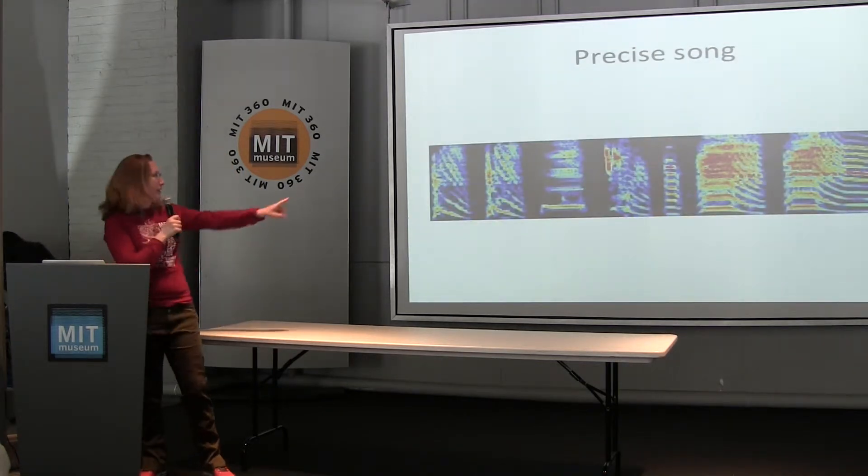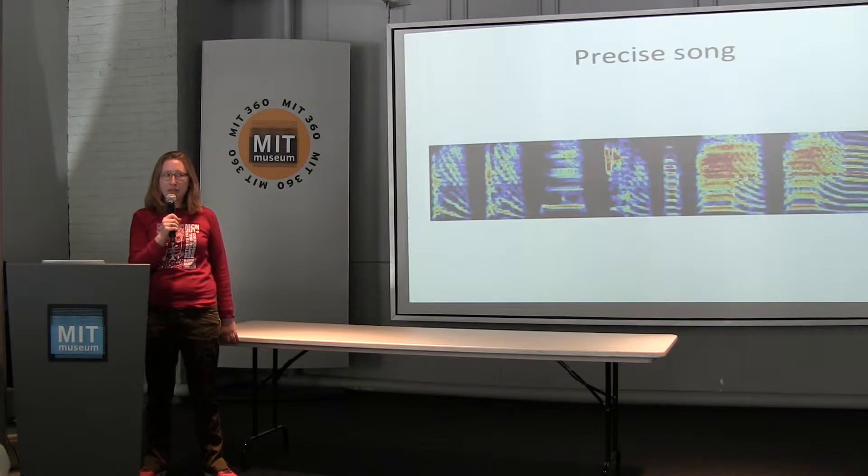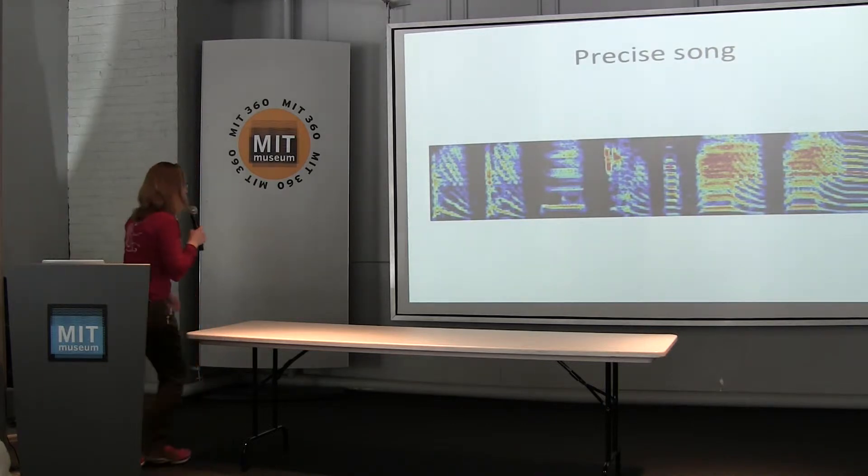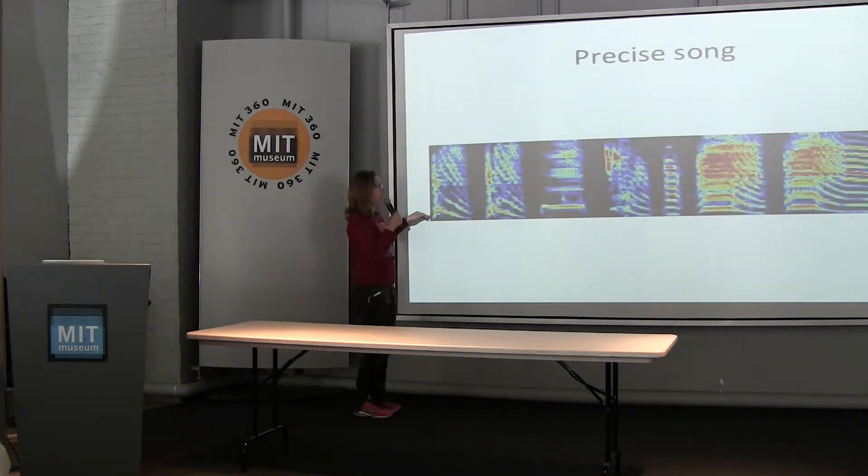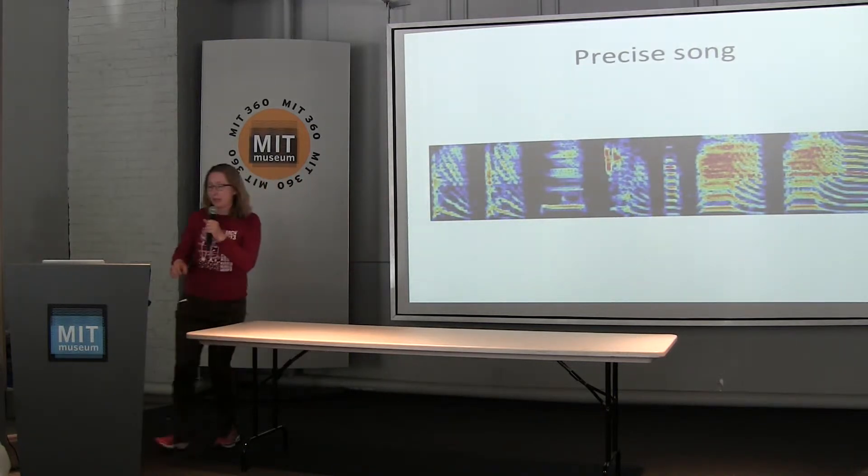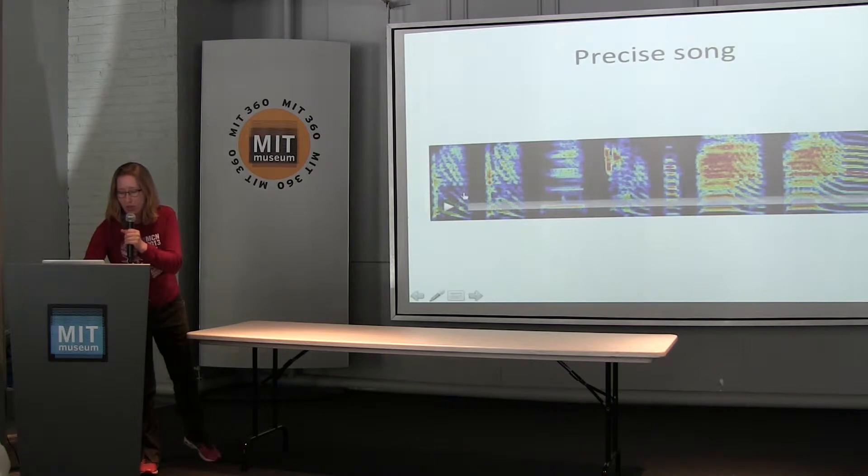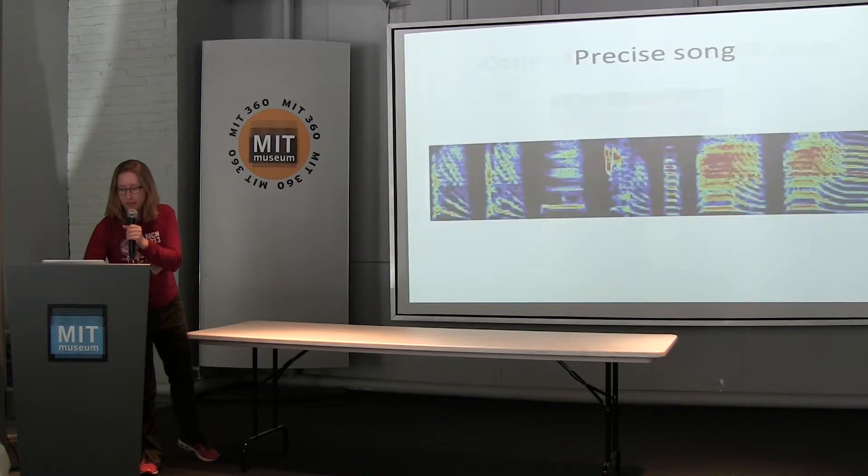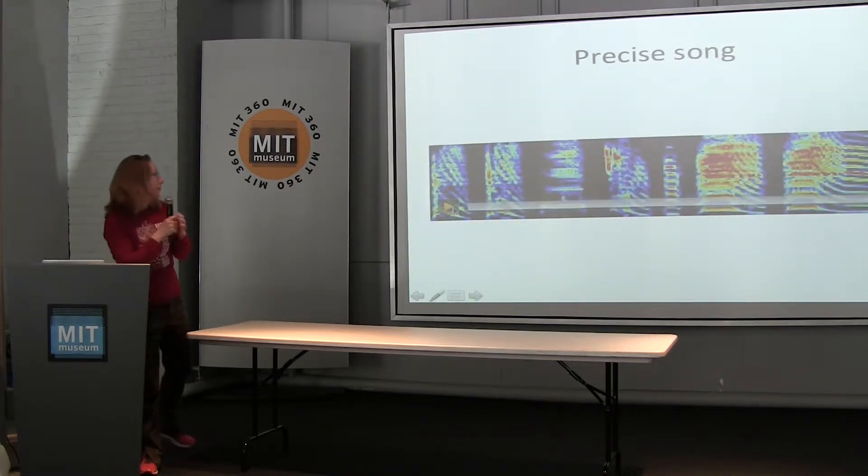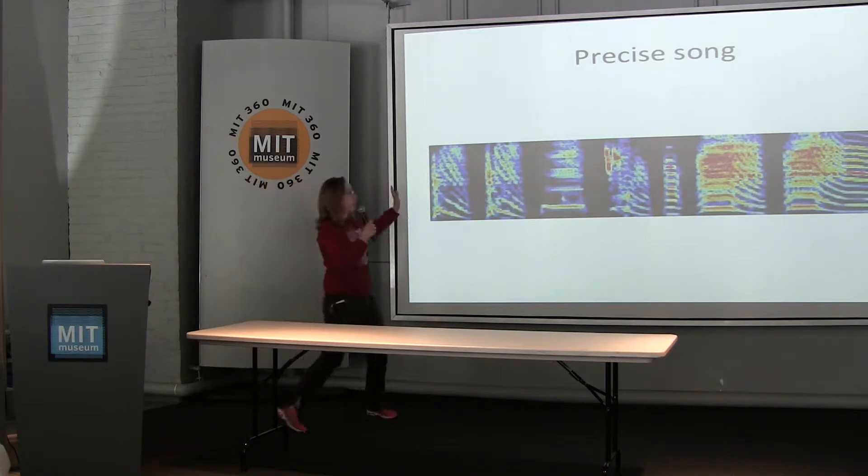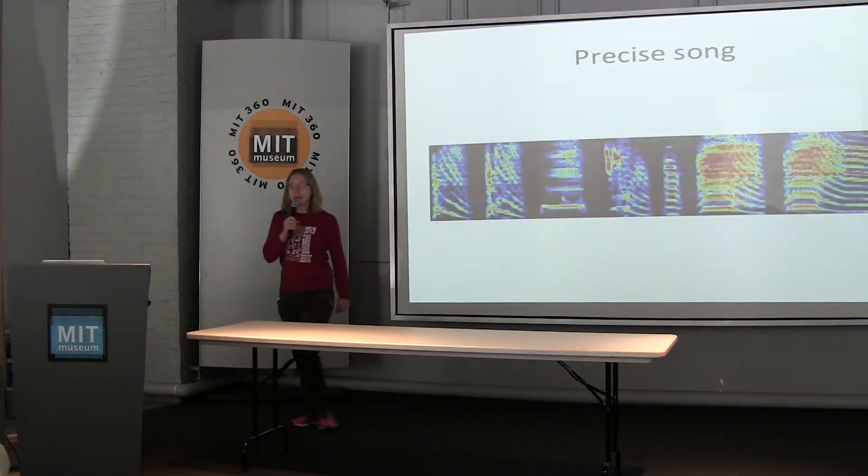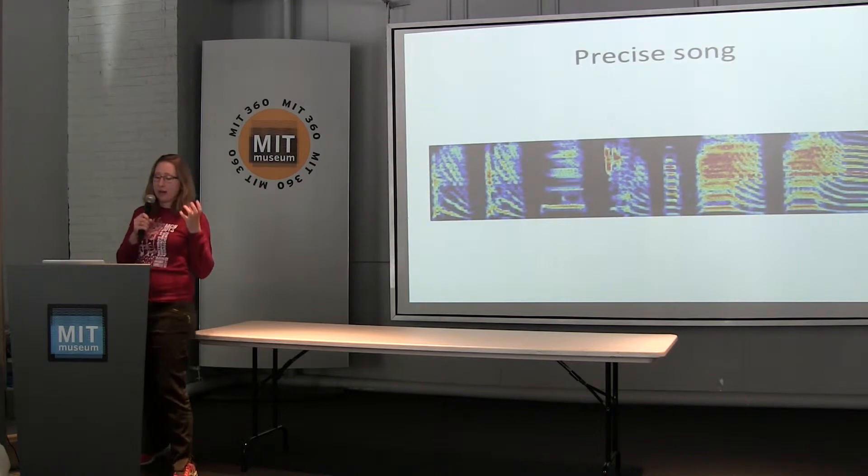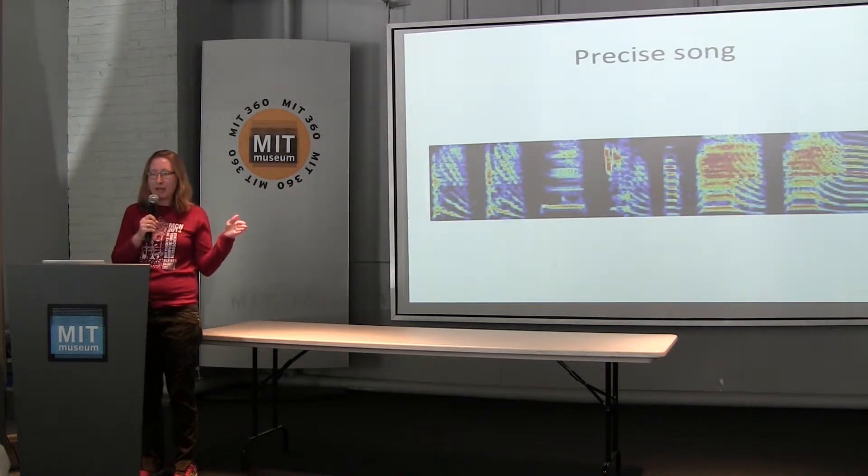And so here is what's called a spectrogram of the bird's song. It's a diagram where this is time and this is what pitches he's singing. You can see it's very precise. I'm going to play it for you. So he needs to learn precisely this, and that descending motor pathway has stored this precise timing of the song.